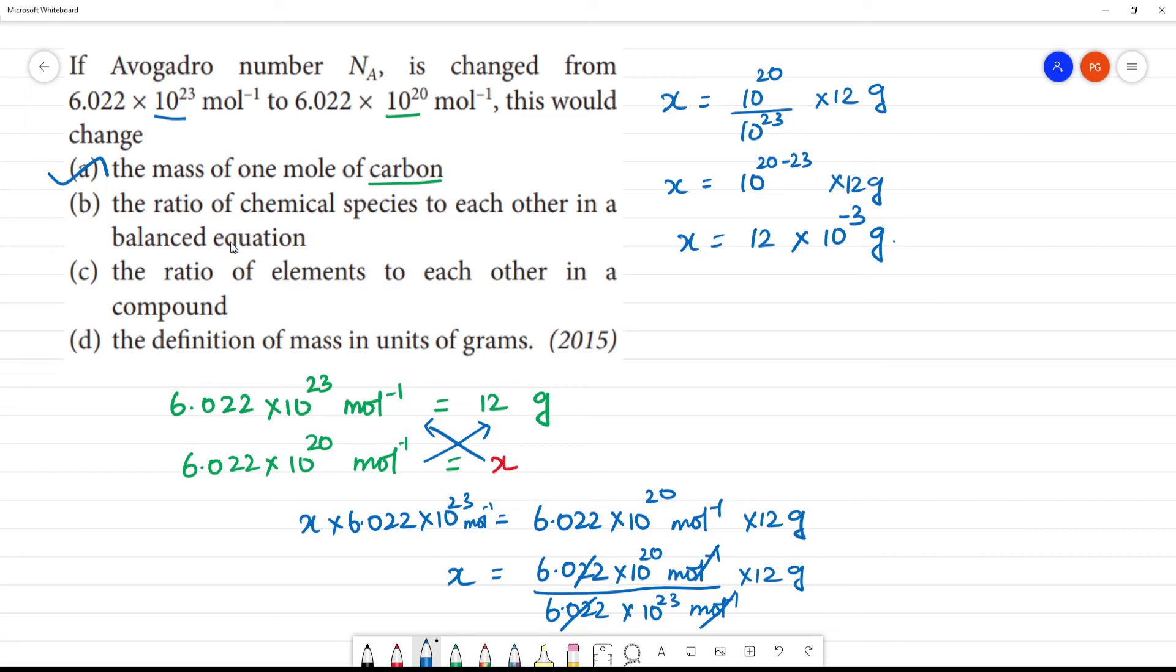The ratio of chemical species to each other in a balanced equation will not change. Definition of mass in units of grams changes. So the change is mass of 1 mole of carbon.